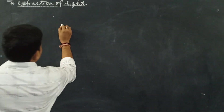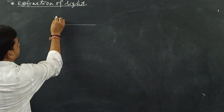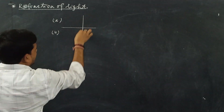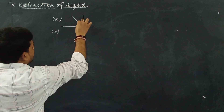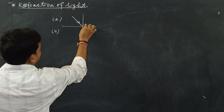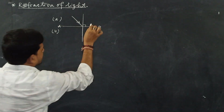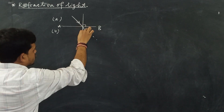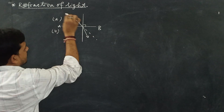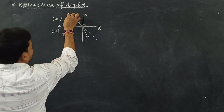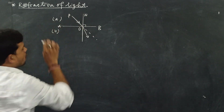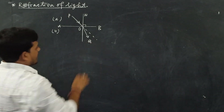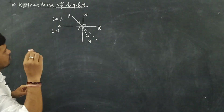In the case of refraction of light, let us consider two mediums: medium A and medium B. The light ray coming from medium A is incident on the separating layer AB. If the light ray bends — where PO is the incident ray, ON is the normal drawn at the point of incidence, and OQ is the refracted light ray — it may bend towards the normal.